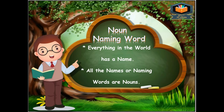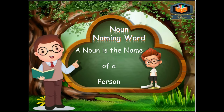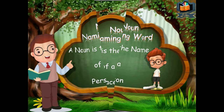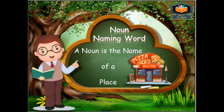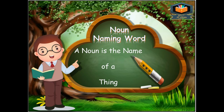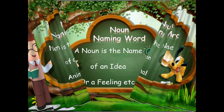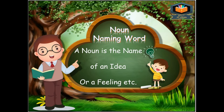Everything in the world has a name. All the names, or these naming words, are called nouns. The definition of a noun is: a noun is the name of a person, a place, a thing, an animal, an idea, or a feeling.